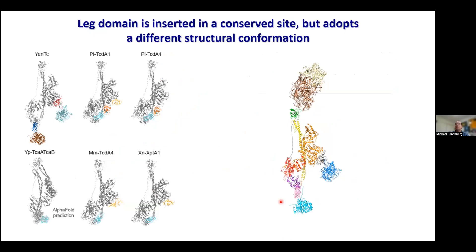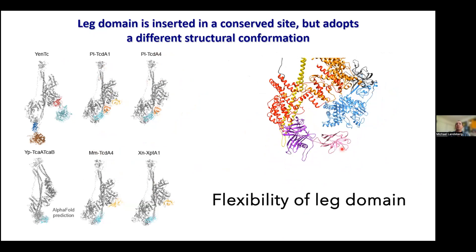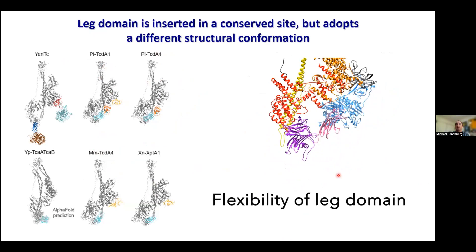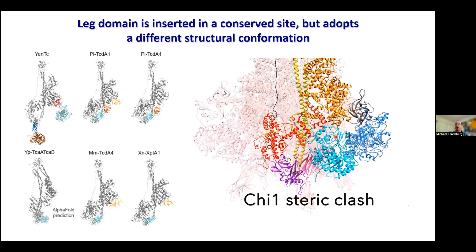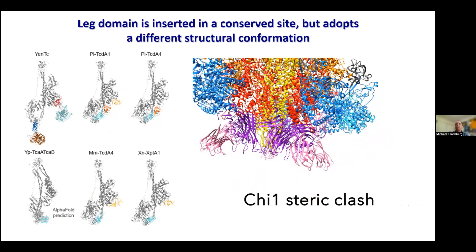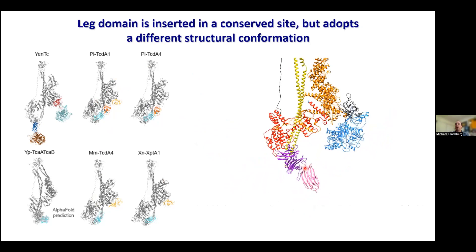You can see this rearrangement animated, showing the swinging out of the leg domain. We asked why we see this 'down' conformation in the Y. entomophaga TCA structure compared to the 'up' conformation seen in almost every other structure. It turns out that when Chi1 is incorporated, it initially looks like it fits nicely, but introducing neighboring protomers creates a clash, preventing all leg domains from being accommodated in the 'up' conformation.